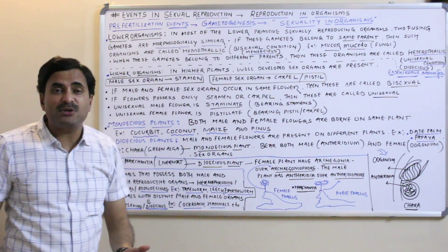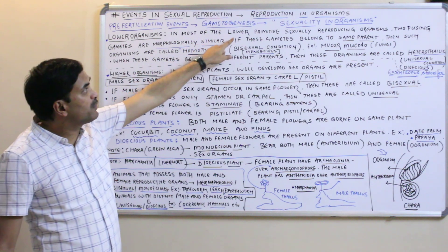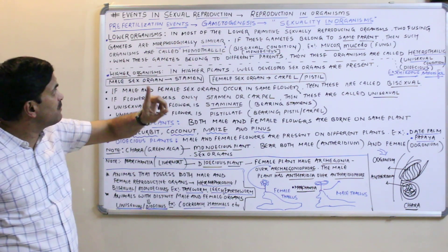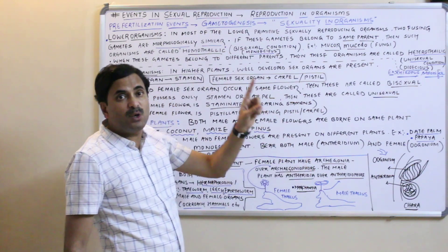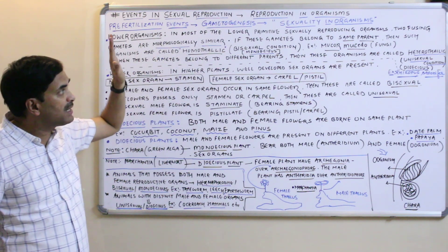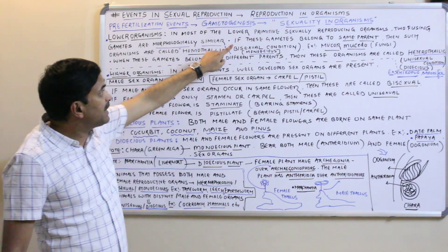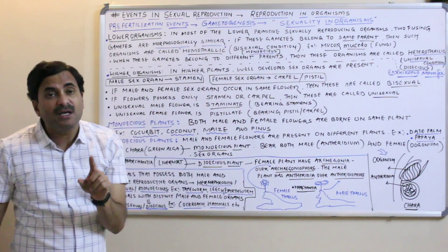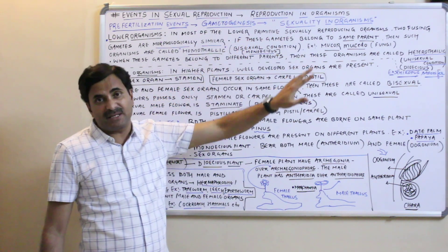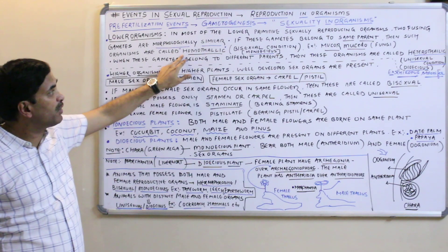In lower organisms — meaning primitive organisms — in most lower primitive sexually reproducing organisms, the two fusing gametes are morphologically similar. If these two morphologically similar gametes belong to the same parent, then such organisms are called homothelic.